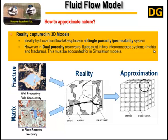Dual porosity reservoirs: flow exists in two interconnected systems. First, the rock matrix, which usually provides the bulk of the reservoir volume. Second, the highly permeable rock fractures. Fluid flow and transport occur in both the connected fractures and the matrix blocks.